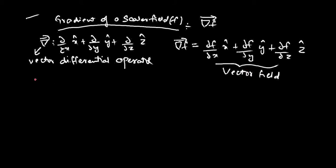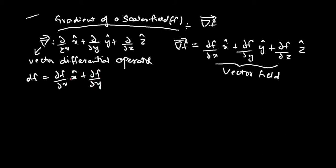What is the physical significance of the gradient of a scalar field? Before we look at that directly, let's start with the expression for dF. F is a scalar function and d is a scalar differential operator. From vector calculus, we know dF equals ∂f/∂x dx plus ∂f/∂y dy plus ∂f/∂z dz.